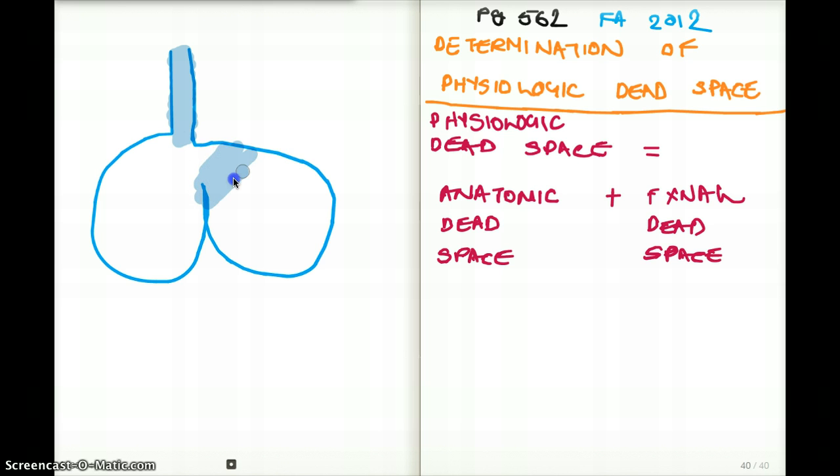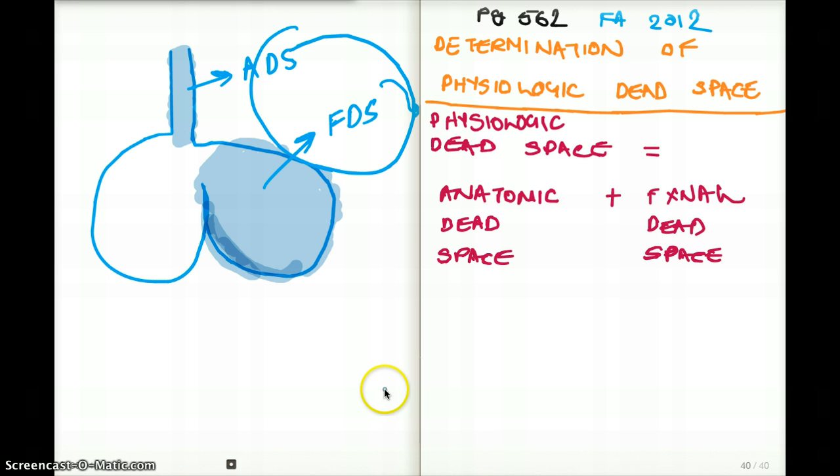And this shaded alveoli did not take part in a particular respiration. Even though this particular alveoli is capable of respiring, it just did not take part in the respiration. So now we can say that this would be our anatomic dead space and this would be our functional dead space because it's functional. It can do gas exchange, but it just did not. So both of them combined together give us our physiologic dead space.